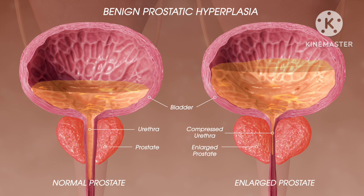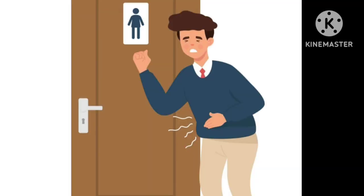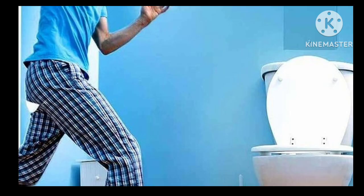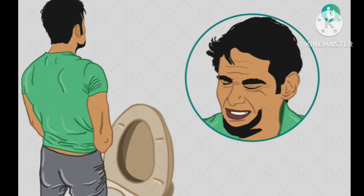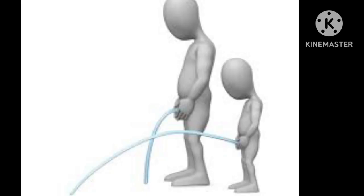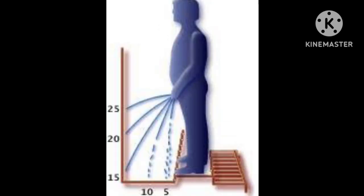The enlarged prostate may compress the urethra, resulting in symptoms that refer to impaired storage of urine, such as urinary frequency, urinary urgency, and nocturia, as well as symptoms referring to impaired voiding, such as difficulty in initiating micturition, poor urinary stream, and terminal dribbling of urine.